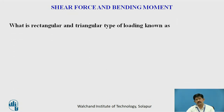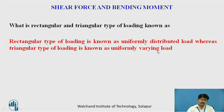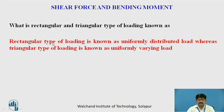What is rectangular or triangular type of loading known as? Pause the video and write your answer. Rectangular type of loading is known as uniformly distributed load (UDL), whereas triangular type of loading is uniformly varying load (UVL). The intensity of load goes on increasing uniformly in UVL, whereas in UDL the load is constant over the length of the beam.